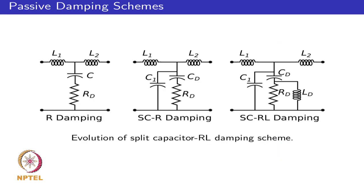We looked at the progression of possible passive damping schemes starting with simple resistive damping, then a split capacitor resistive damping, and a split capacitor RL damping. As one goes with higher complexity, it is possible to reduce the power dissipation, but with higher complexity you have more components and it can be more expensive. So there is a trade-off in what could be applicable.